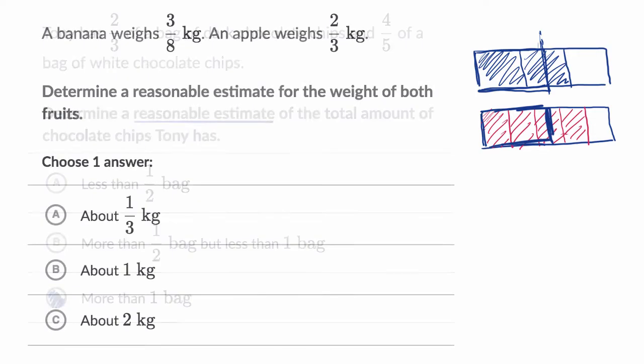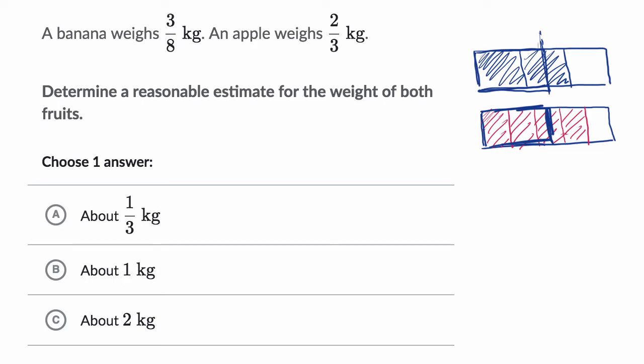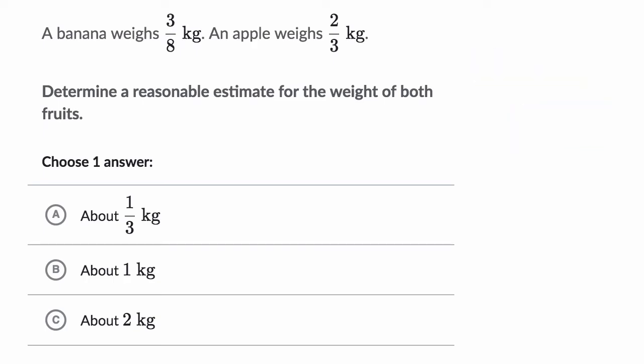Let's do another example. So here we are told that a banana weighs three-eighths of a kilogram, an apple weighs two-thirds of a kilogram. Determine a reasonable estimate for the weight of both fruits. Pause this video again and see if you can have a go at that.